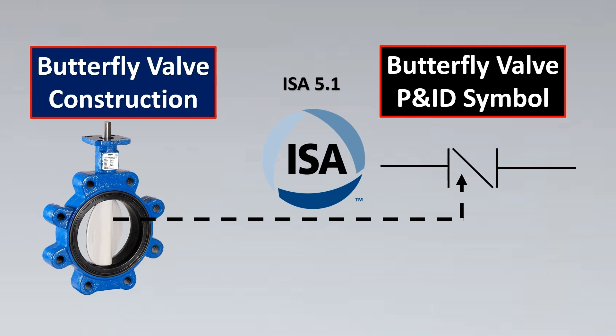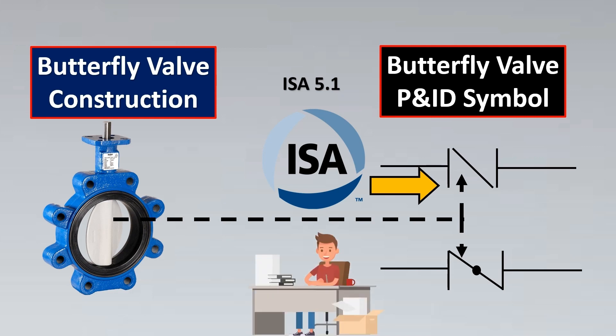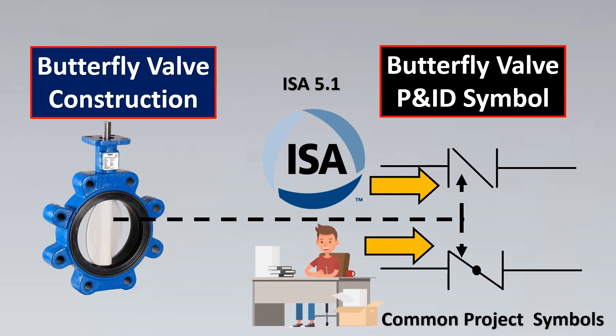This line represents the vane going open and close. That is what ISA 5.1 shows. But sometimes in certain projects the same symbol is shown with a dot in between — that dot represents the rod that is moving the butterfly vanes. Regardless of the exact symbol, it may differ slightly, but you can understand with respect to the construction that these symbols represent a butterfly valve.